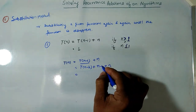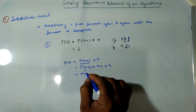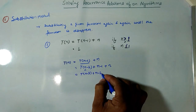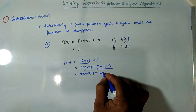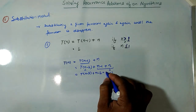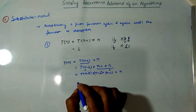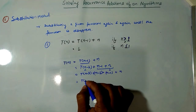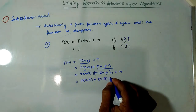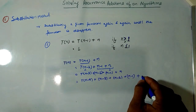Similarly, T(n-2) = T(n-3) + (n-2), so substituting gives T(n) = T(n-3) + (n-2) + (n-1) + n. Continuing this pattern, T(n) = T(n-4) + (n-3) + (n-2) + (n-1) + n.